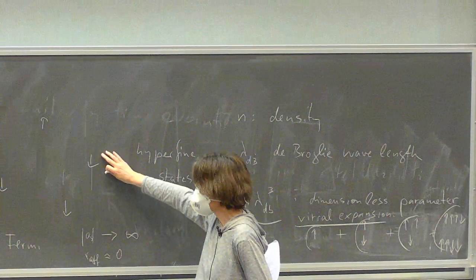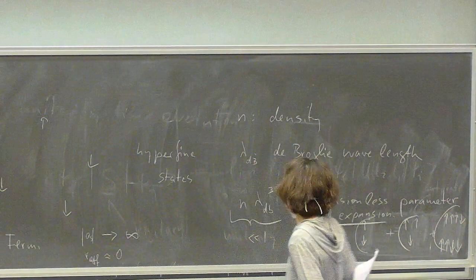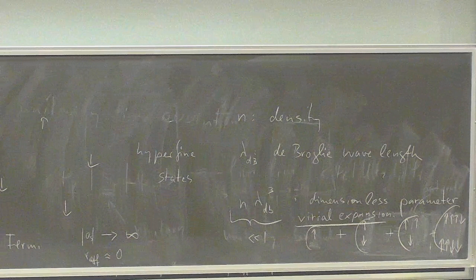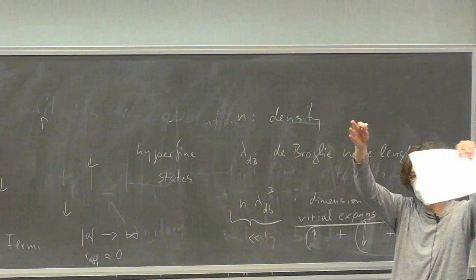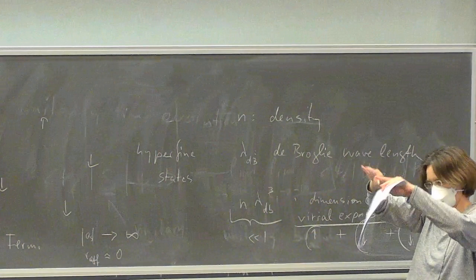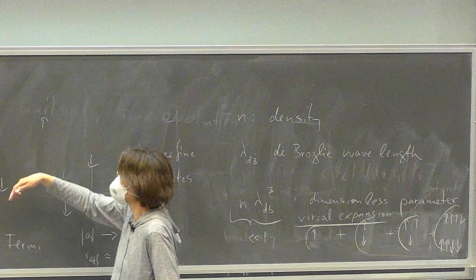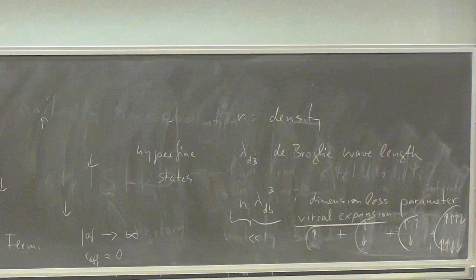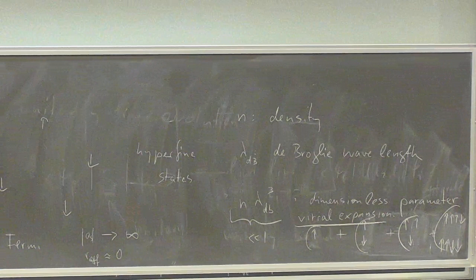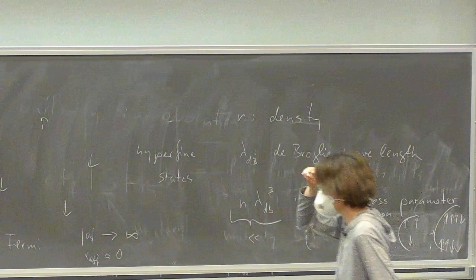This system has been realized experimentally, and the virial equation of state is actually used in experiments to extract the temperature of the system. They have a density profile; in the wings where density is very low, they are above the transition temperature and use the virial coefficients to calibrate the temperature from experimental data. So it's also of practical interest.